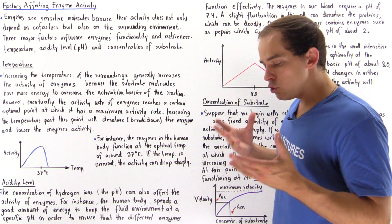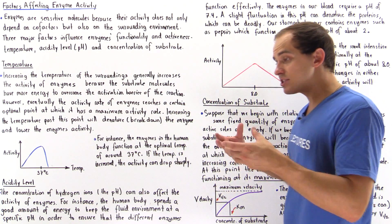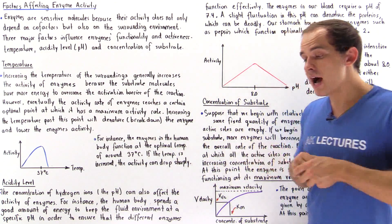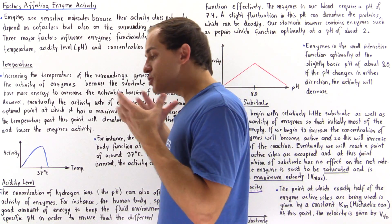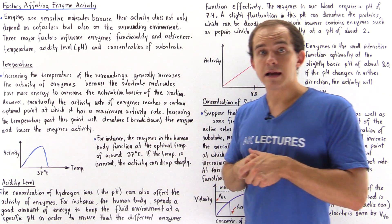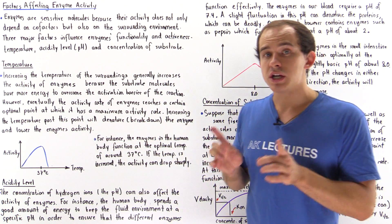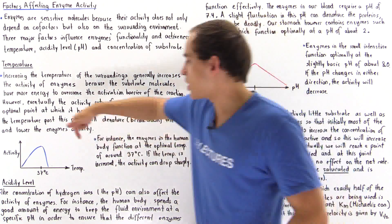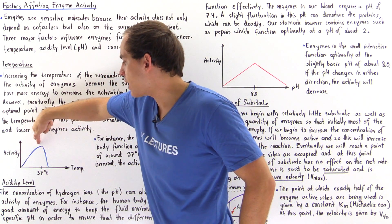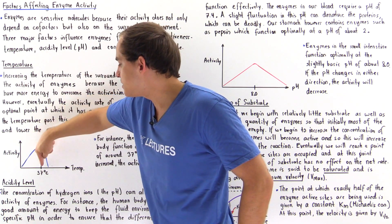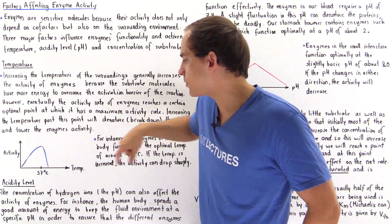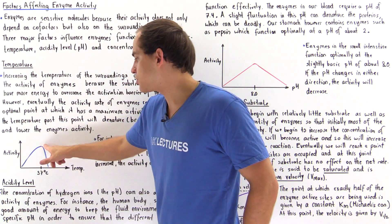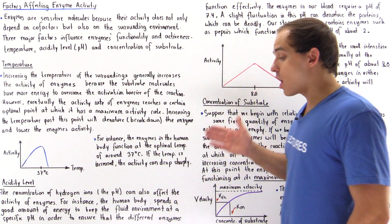One example is the human body. The human body has a core temperature of about 37 degrees Celsius, and this is because the majority of the proteins and enzymes in the human body function optimally at 37 degrees Celsius. Increasing the temperature will increase the rate up to this optimal point, and increasing it further will cause enzyme activity — shown on the y-axis — to drop sharply.